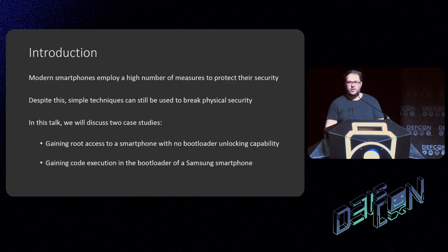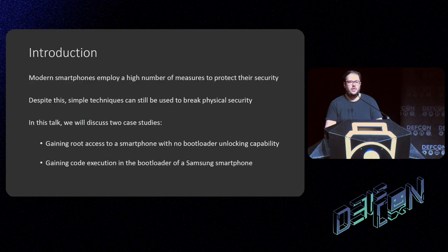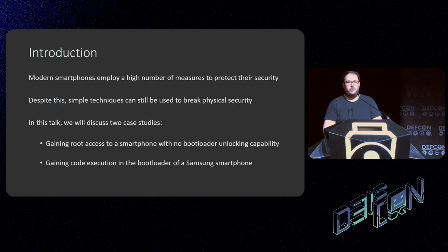We're going to be doing two 20-minute case studies. The first is gaining root access on a smartphone with no bootloader unlocking capability — where the manufacturer removes the ability to unlock the bootloader. The second is gaining code execution in the bootloader of a Samsung smartphone in order to bypass secure boot and execute your own kernel and do other malicious things.